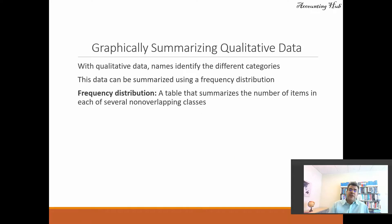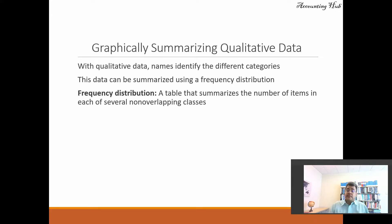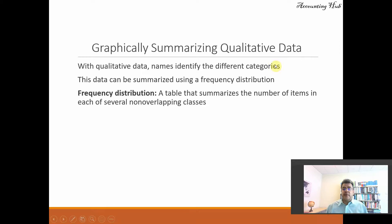So, graphically summarizing qualitative data. With qualitative data, names identify the different categories. This data can be summarized using a frequency distribution. And here is where Tableau is easier — we don't need to calculate the frequency; Tableau does it all. A frequency distribution is a table that summarizes the number of items in each of several non-overlapping classes.